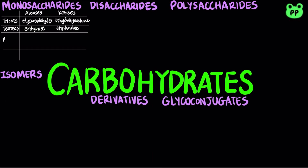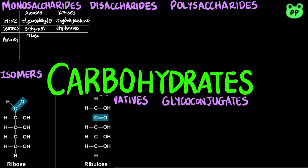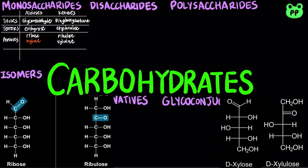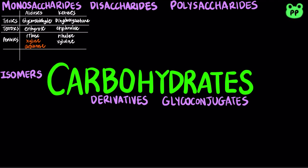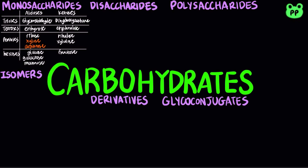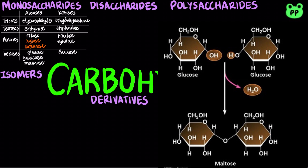A pentose contains five carbon atoms, including ribose and ribulose, xylose and xylulose, and arabinose. A hexose contains six carbon atoms, such as glucose, galactose, and mannose, which are aldoses, and fructose, which is a ketose.